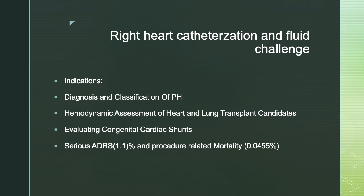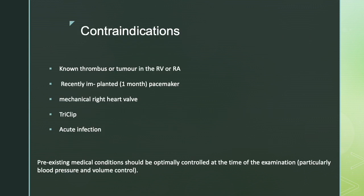Another form of testing is the fluid challenge, usually done to classify the cause of PH and for hemodynamic assessment before transplants or cardiac shunts. The main contraindications are hemodynamic instability, a recently placed cardiac clip, mechanical heart valve, or pacemaker. Pre-existing conditions must be optimized because you do not want the patient to go into fluid overload.